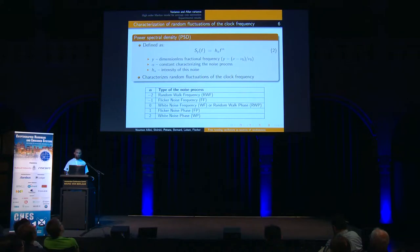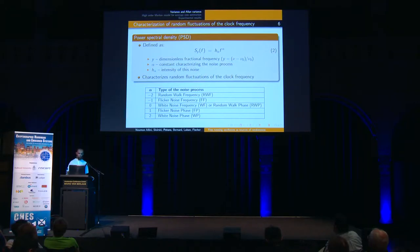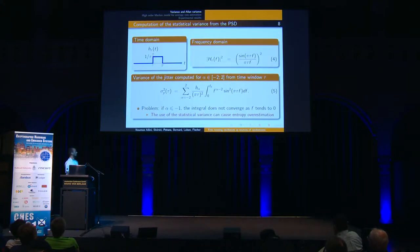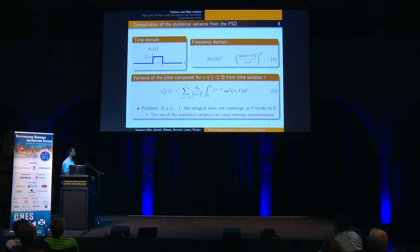The entropy at the output of the generator depends on the variance of jitter, and how this variance can be computed from the power spectral density of the random fluctuations affecting the clock frequency. The variance can be computed by integrating the power spectral density multiplied by the Fourier image of the variance operator. For statistical variance, which is the most commonly used, this integral has one big disadvantage: for low-frequency noises such as flicker noise, this integral does not converge. Consequently, statistical variance causes entropy overestimation.